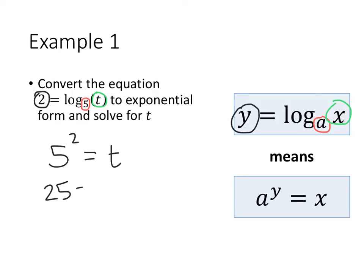That's 5 squared, that's 25. And so we actually don't have anything else to do to solve for t. We can see that t equals 25.